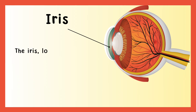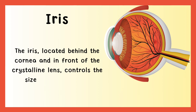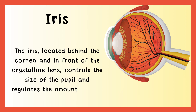Iris. The iris, located behind the cornea and in front of the crystalline lens, controls the size of the pupil and regulates the amount of light entering the eye.